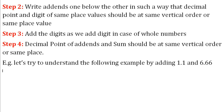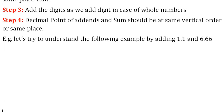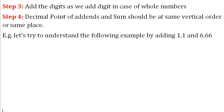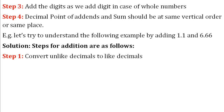Example. Let's try to understand the following example by adding 1.1 and 6.66. Solution. Steps for addition are as below. Step 1: Convert unlike decimals to like decimals.